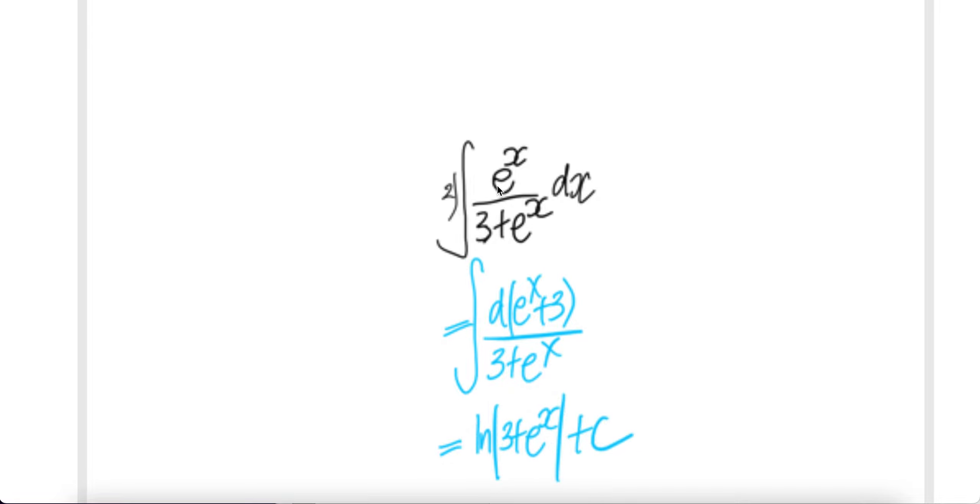Number two: we can write the upstairs as the derivative of e to the power of x plus 3. The derivative of sum is equal to sum of the derivative. The derivative of this is e^x plus the derivative of constant is zero. So this is the same as that.